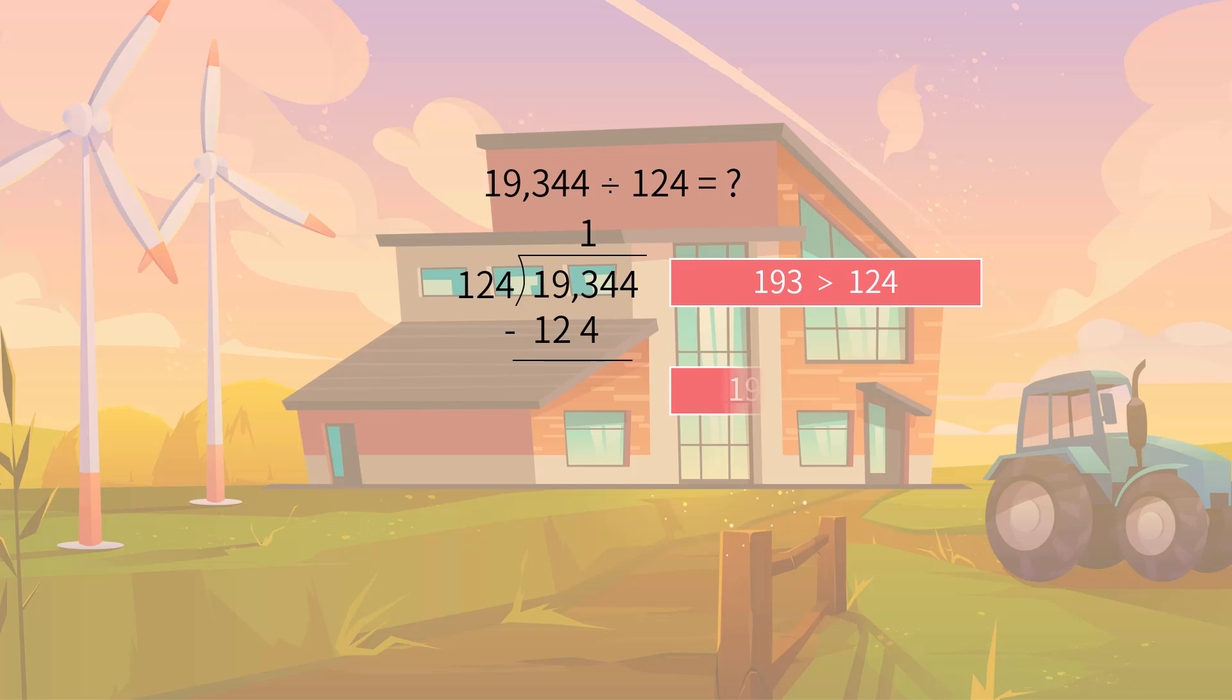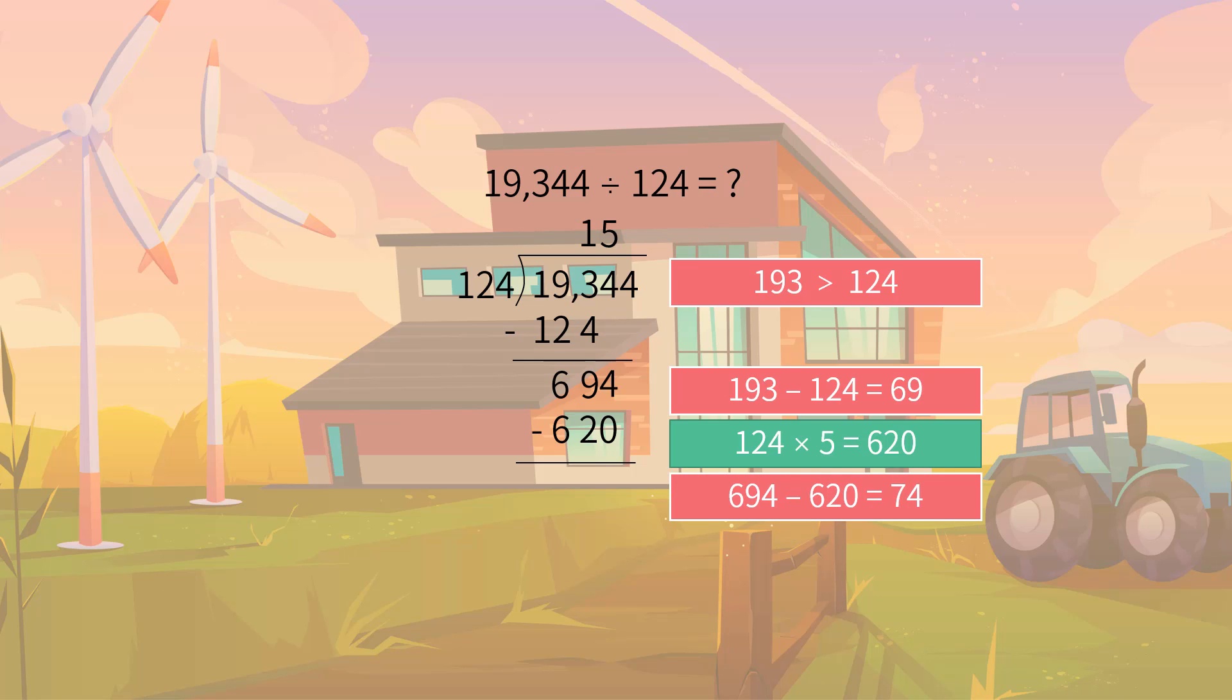We repeat these steps. As 69 is smaller than 124, we bring down one more digit from the dividend, making it 694. We continue with 694 divided by 124 with another partial quotient 5. Then we multiply the quotient and divisor again and subtract the product from the dividend. Finally, we find the quotient is 156 with no remainder.